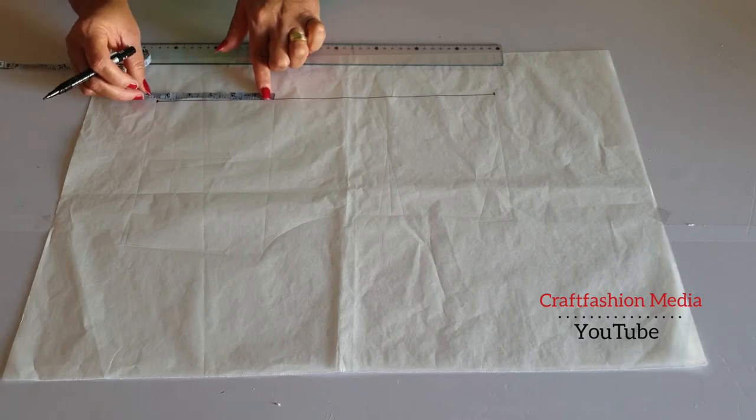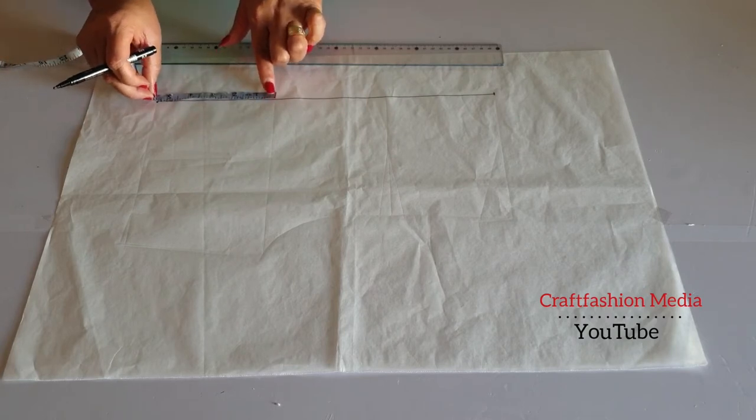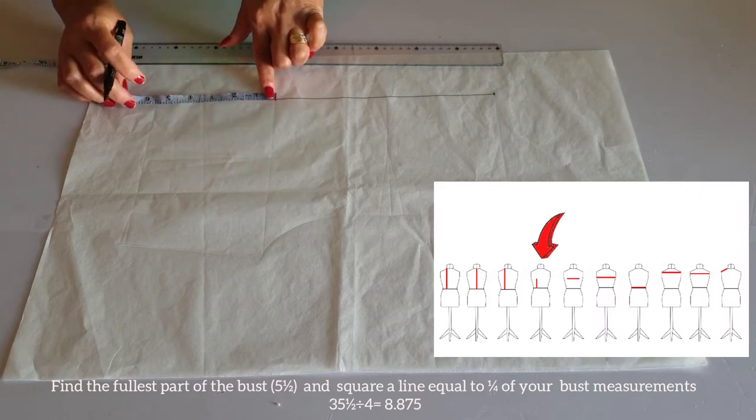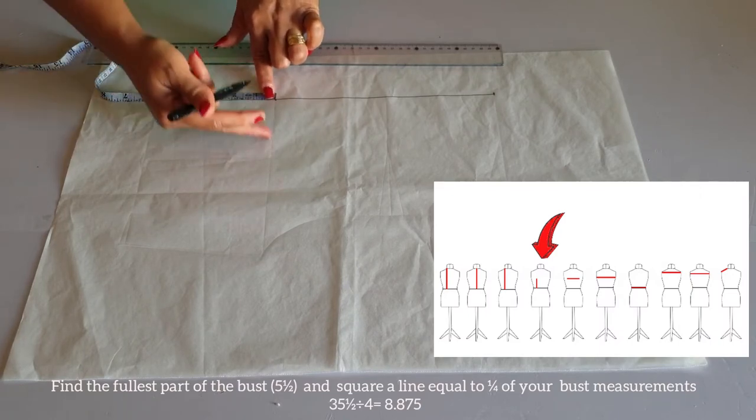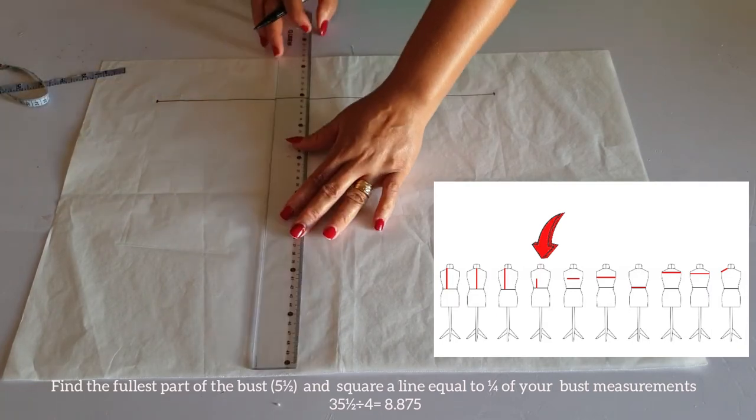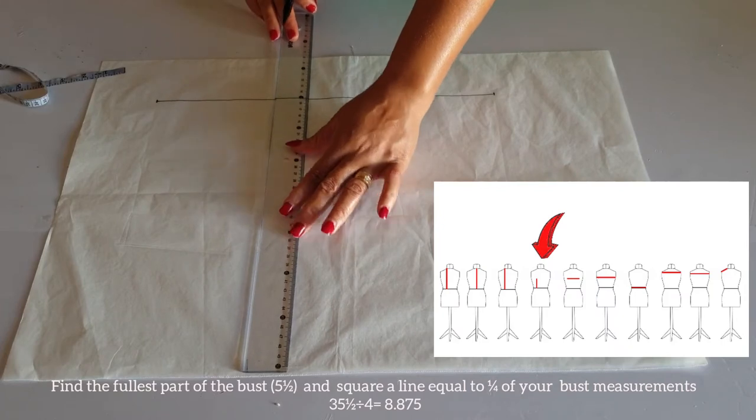So the next step to take is to locate the fullest part of the bust, which is the first part of the bust apex location from the waist up. And I have 5 and a half inches. And I will mark it out. It is best to measure from the waist up.